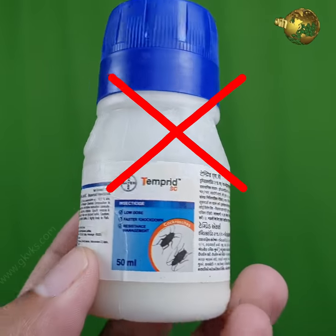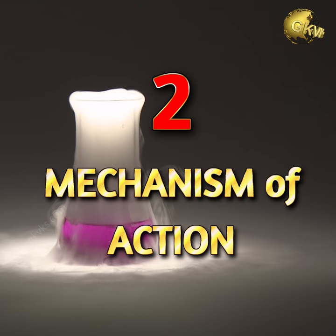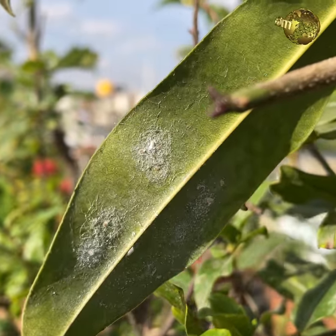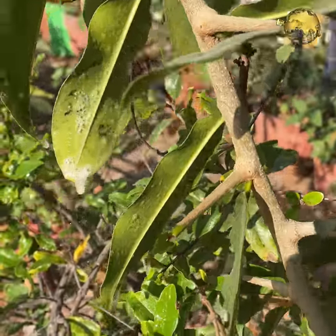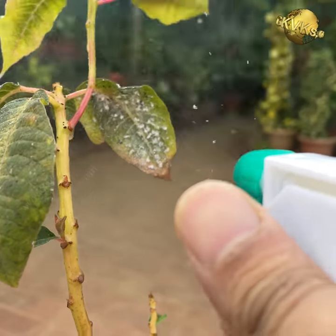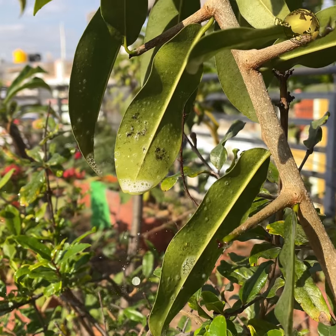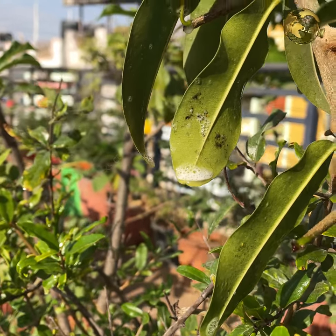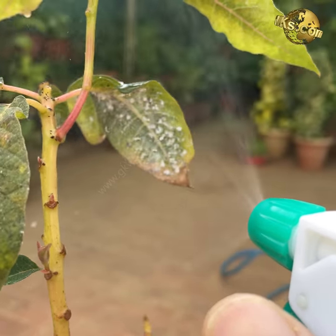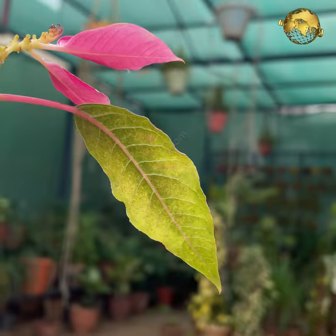As usual, we always recommend not using hazardous chemical fertilizers and pesticides. Insecticidal soap acts by contact and kills insects in three ways: it damages their cell membranes causing the contents to leak out, leading to dehydration and death; it melts the protective wax that covers certain insects like mealybugs and scale insects, leading to dehydration from evaporation; and it blocks the pores through which insects breathe, leading to asphyxiation and death. The pest treated usually dies very rapidly within minutes of treatment.